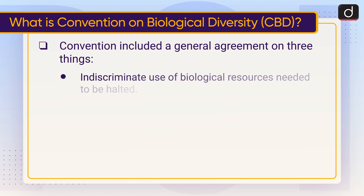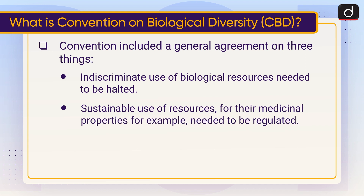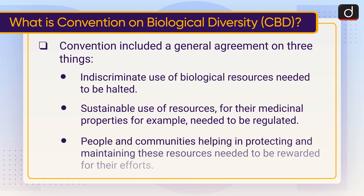First, indiscriminate use of biological resources needed to be halted. Second, sustainable use of resources for their medicinal properties, for example, needed to be regulated. Third, people and communities helping in protecting and maintaining these resources needed to be rewarded for their efforts.